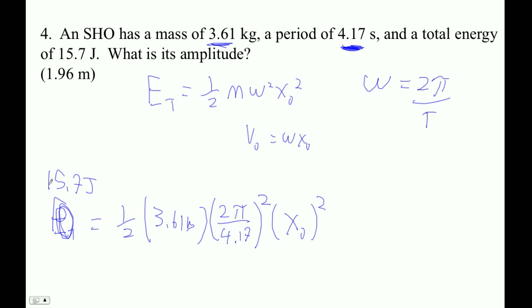So I'm going to take 15.7 times 2, divided by 3.61, divided by open parentheses 2 pi divided by 4.17 close parentheses squared.